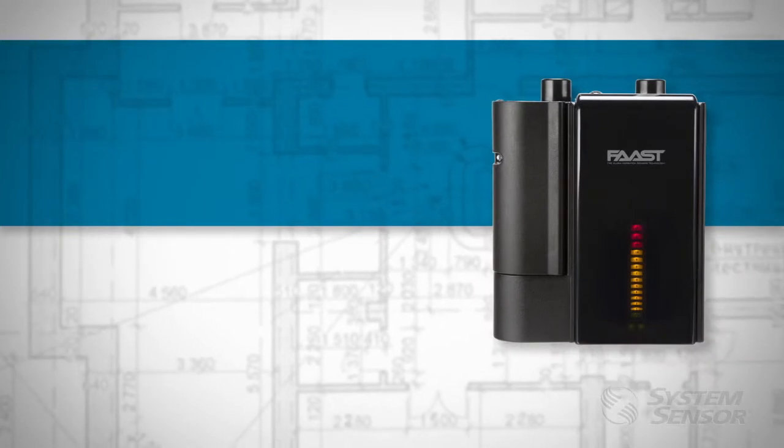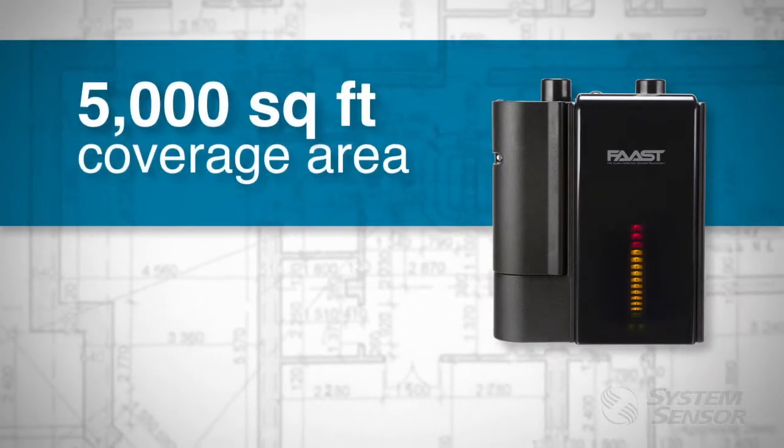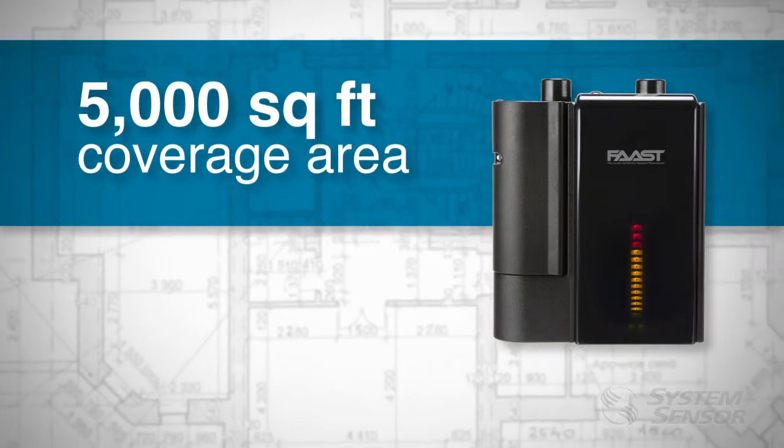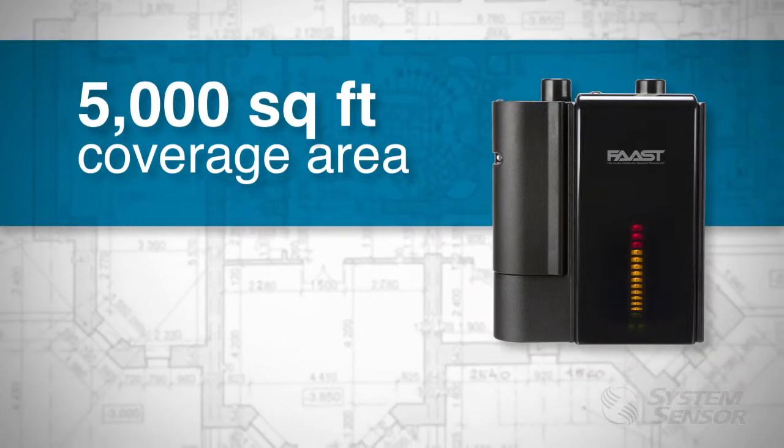The configuration flexibility allows coverage of spaces up to 5,000 square feet, either in a straight line or a branch setup accessible from the top or bottom of the unit.